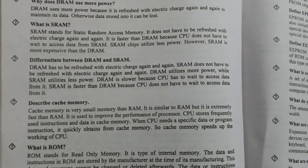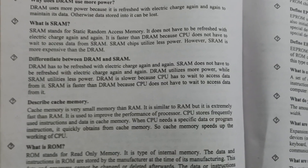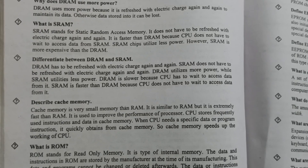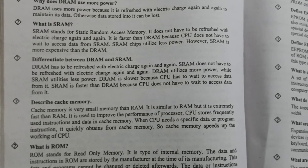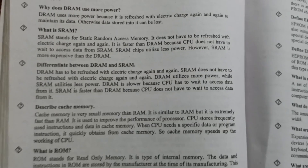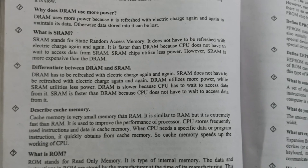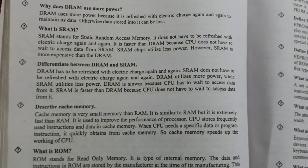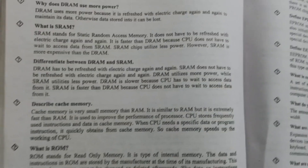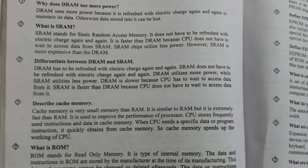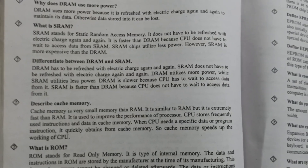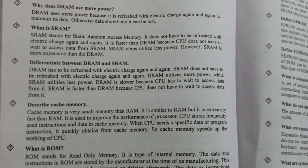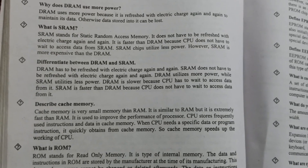DRAM utilizes more power, while SRAM utilizes less power. DRAM is slower because the CPU has to wait to access data from it. SRAM is faster than DRAM because the CPU does not have to wait to access data from it.